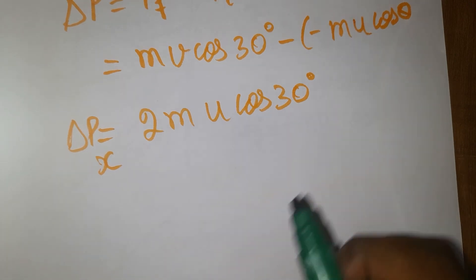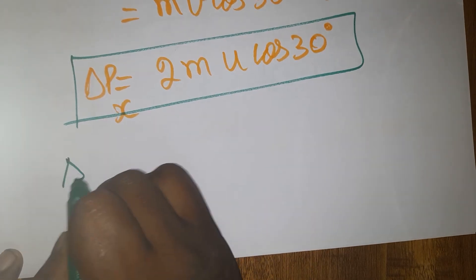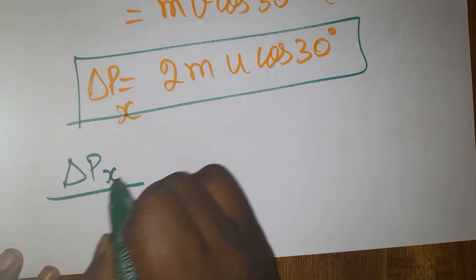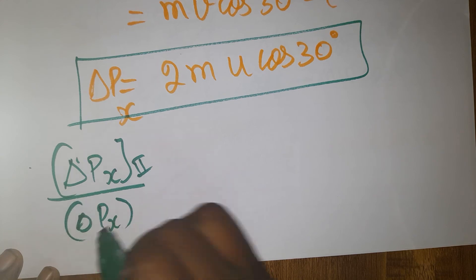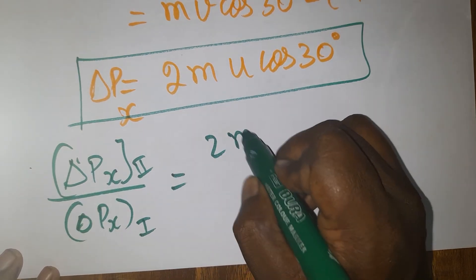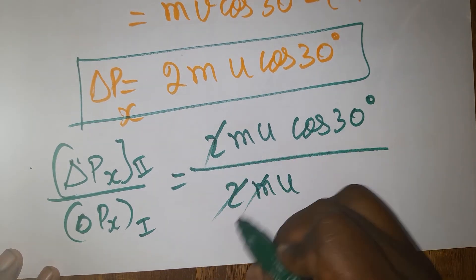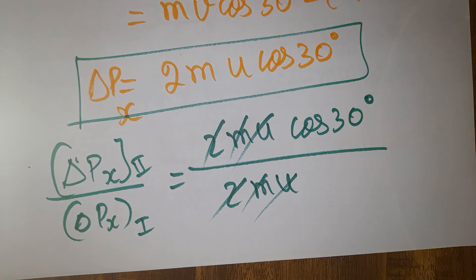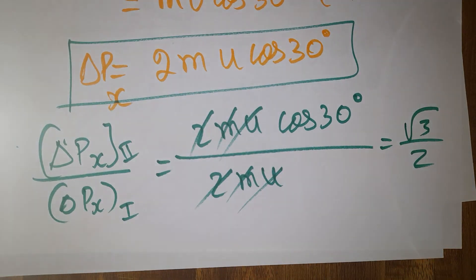Now they ask for the ratio between the first and second case. Change in momentum of Case 2 (x-axis) is 2MU×cos30. Change in momentum of Case 1 is 2MU. The ratio of Case 2 to Case 1 is 2MU×cos30 / 2MU. The 2, M, and U all cancel, leaving cos30 = √3/2. If you take Case 1 to Case 2, the answer is 2/√3. The opposite condition can also be found.